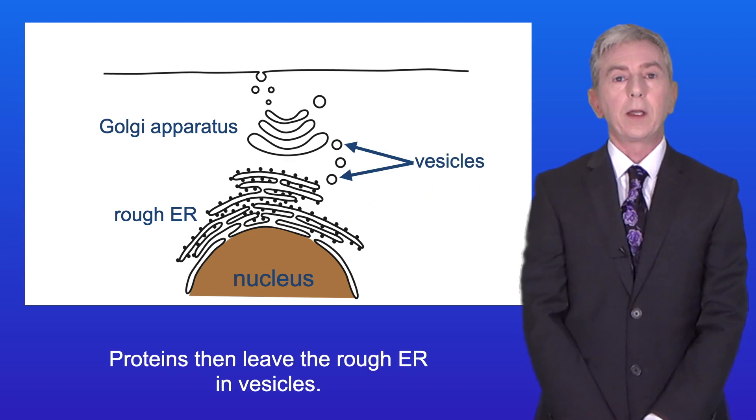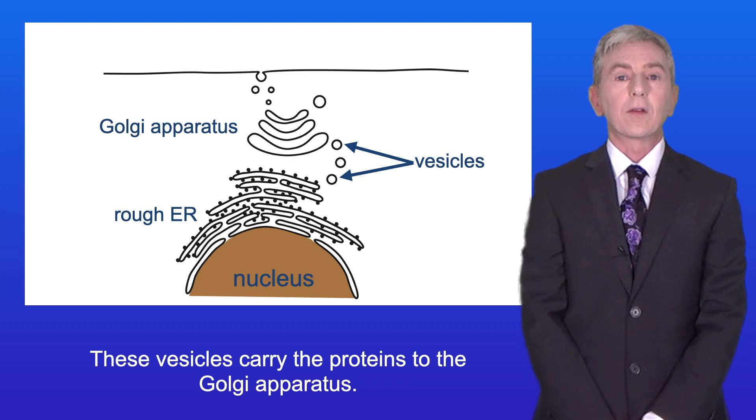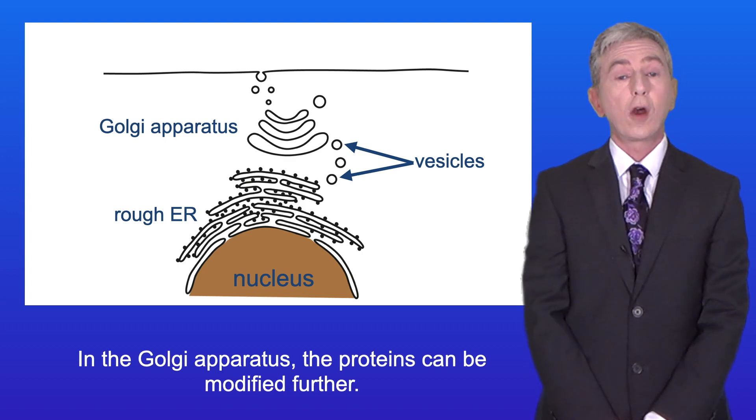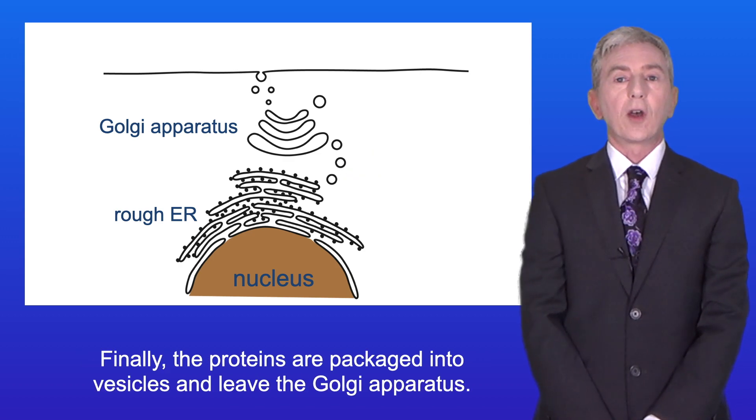Proteins then leave the rough ER in vesicles and these vesicles carry the proteins to the Golgi apparatus. In the Golgi apparatus the proteins can be modified further. Finally the proteins are packaged into vesicles and leave the Golgi apparatus.